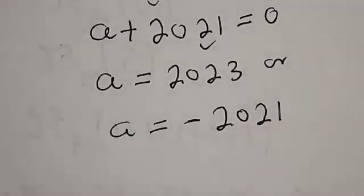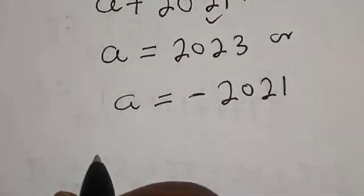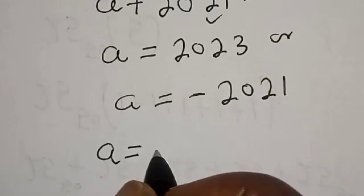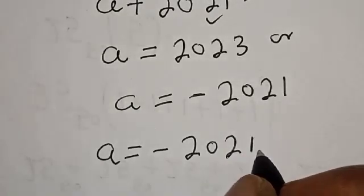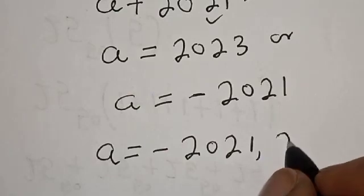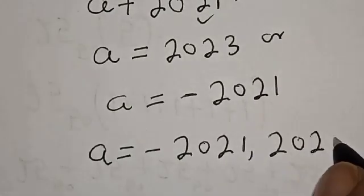Because if this +2021 crosses the equal sign it becomes minus. Therefore our final answer: a = -2021 and 2023.